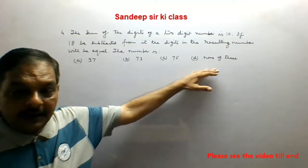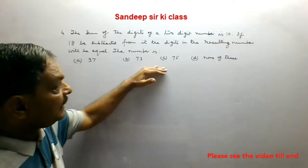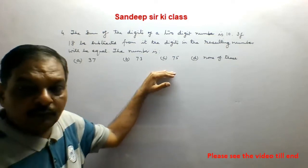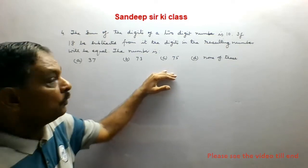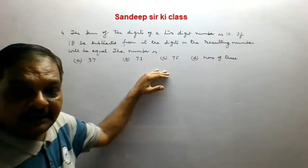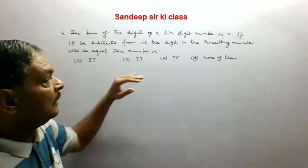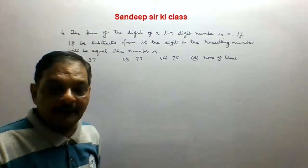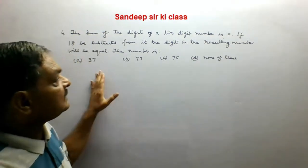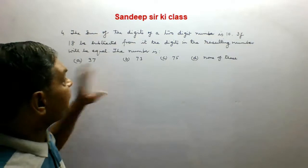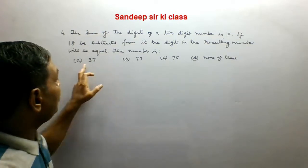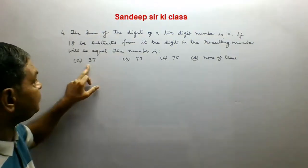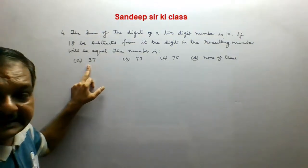If we attempt this question from a subjective point of view, it seems a difficult one. But if we take the options one by one, the question is a simple one. Now we take options one by one — the first option is 37.